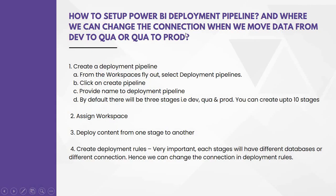For the second part of the question — where we can change the connection when moving data from dev to QA or QA to production — in deployment pipeline deployment rules, each stage will have a different database or different connection. Hence, we can change the connection in deployment rules. Just remember: always in deployment rules, we can change the connection.